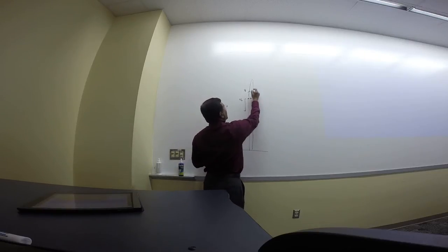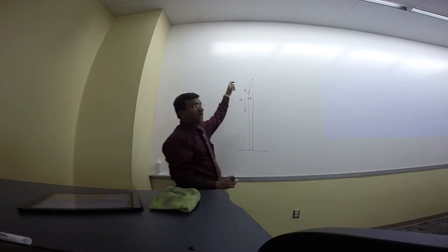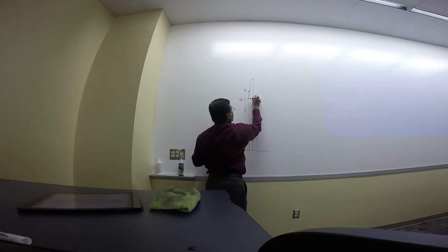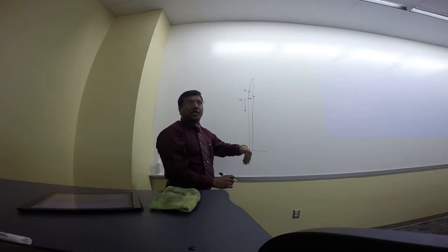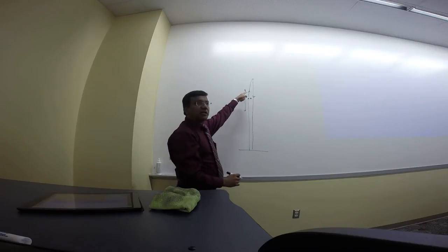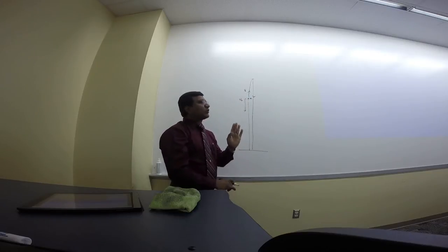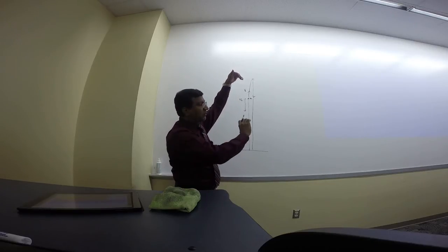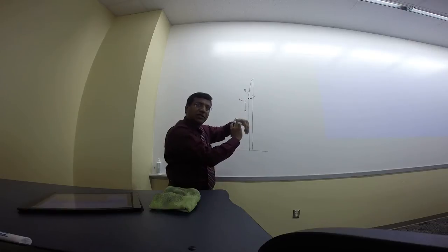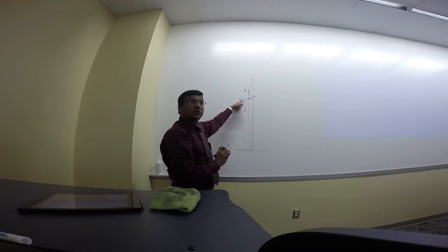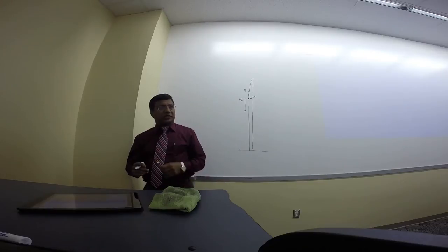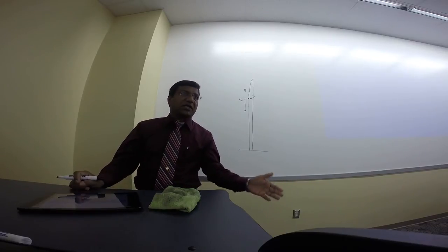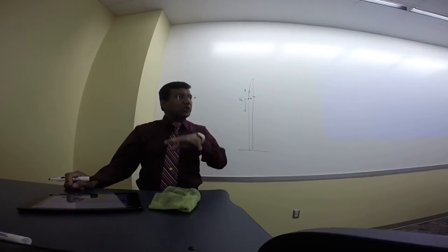For object A thrown upward: at the highest point the velocity is zero, then it speeds up on the way down. When it passes the top of the building on the way down, it's going exactly at the same speed it was thrown. If thrown at 30 m/s, it slows to zero, then passes back down at 30 m/s. So both objects hit the ground at the same speed. If you don't get that, you didn't get the physics.